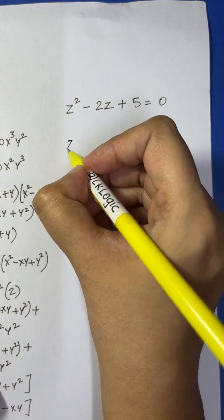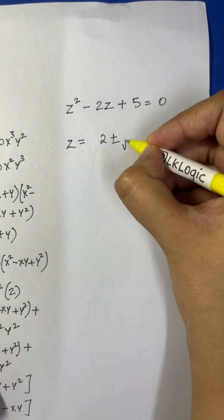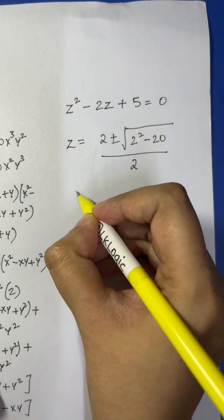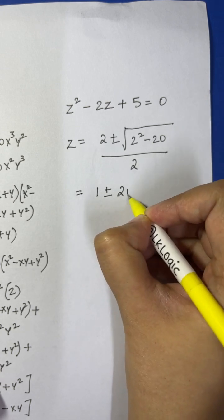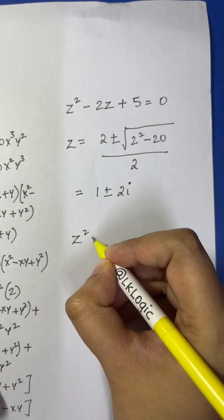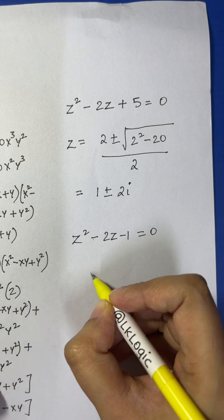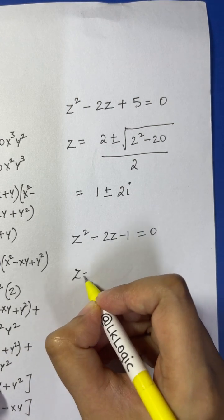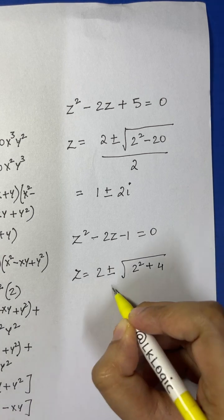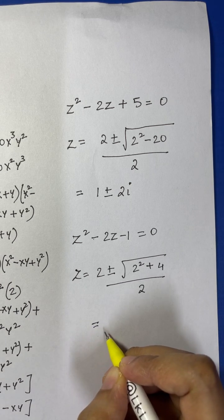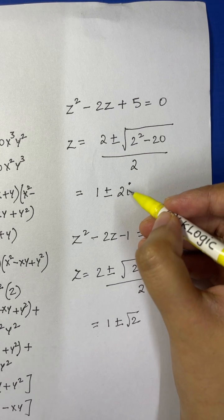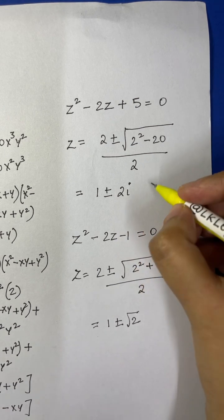For the first equation z squared minus 2z plus 5 equals zero, applying the quadratic formula gives z equals (2 plus or minus square root of (4 minus 20)) over 2, which simplifies to 1 plus or minus 2i — a complex number. For the second equation z squared minus 2z minus 1 equals zero, we get z equals (2 plus or minus square root of (4 plus 4)) over 2, which simplifies to 1 plus or minus square root of 2.